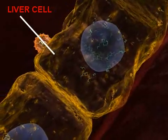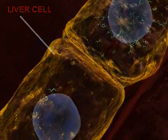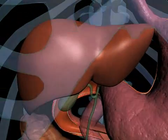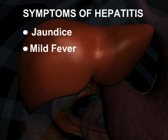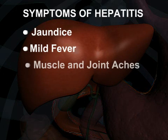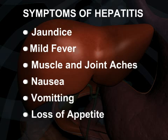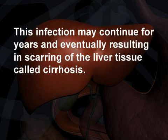These new viruses in turn infect other liver cells. Eventually, this process shuts down most of the normal functions of the liver cell and damages it. Symptoms of hepatitis include: jaundice, mild fever, muscle and joint aches, nausea, vomiting, loss of appetite, and abdominal pain.